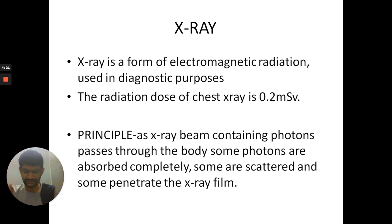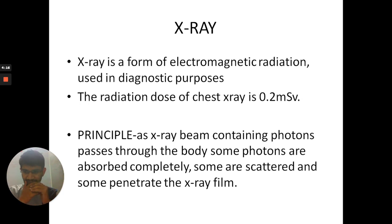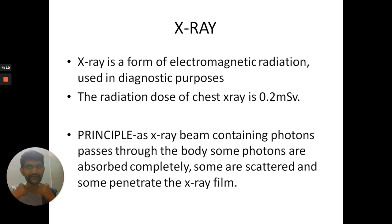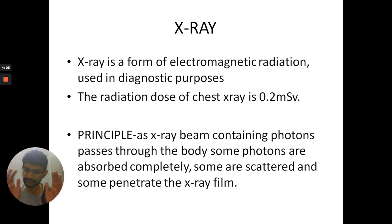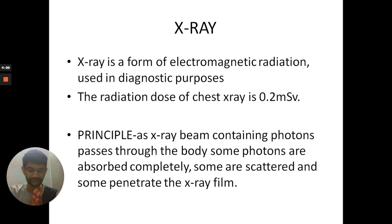What is the principle? When the X-ray beam with continuous X-ray photons passes through the body, some tissues absorb the photons completely — those which are dense, like bone. Some less dense tissues like air allow photons to pass through them, and intermediate density tissues like soft tissue scatter them. Based on this differential absorption, the image is created.